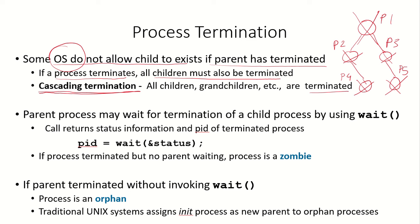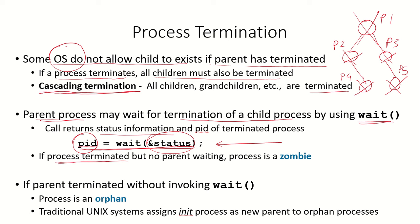The parent process may wait for the termination of a child process using the wait system call, and the status information of the child will be returned to the parent. If a process terminated but there was no parent waiting — meaning the parent did not use the wait system call — then the child cannot return its status information, and that child process is known as a zombie.